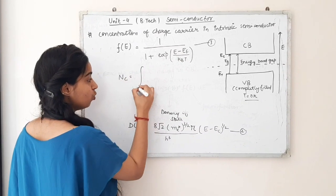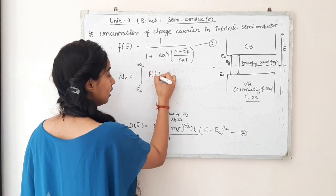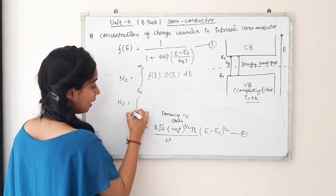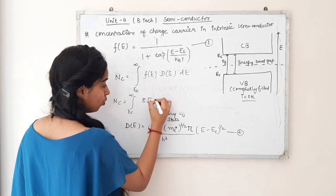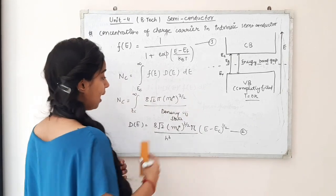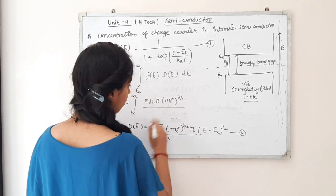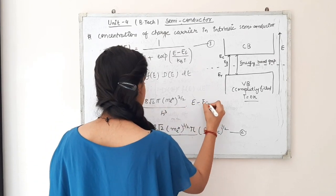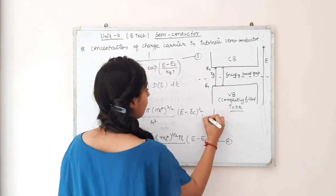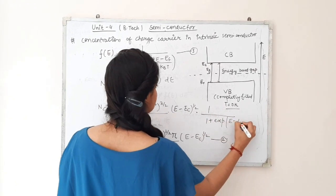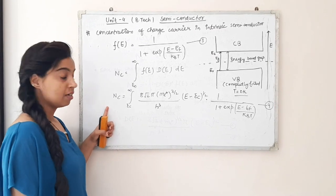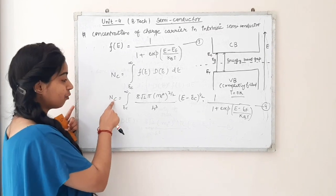Putting equations 2 and 3 into equation 1, Nc equals the integral from Ec to infinity of: (8√2 π me*^(3/2) / h³) × (E − Ec)^(1/2) × 1/[1 + exp((E − EF) / kBT)] dE. This is the expression for the density of electrons in the conduction band.